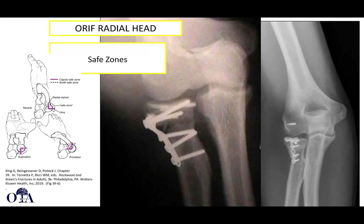With forearm rotation, if you don't place your plate within that safe zone, or if it's a normal screw with a head that doesn't countersink, that may impinge on the proximal radial ulnar joint. You have to make sure your implants don't enter the proximal radial ulnar joint in any position of rotation. So when doing ORIF of the radial head, especially with a plate, you have to keep this in mind.